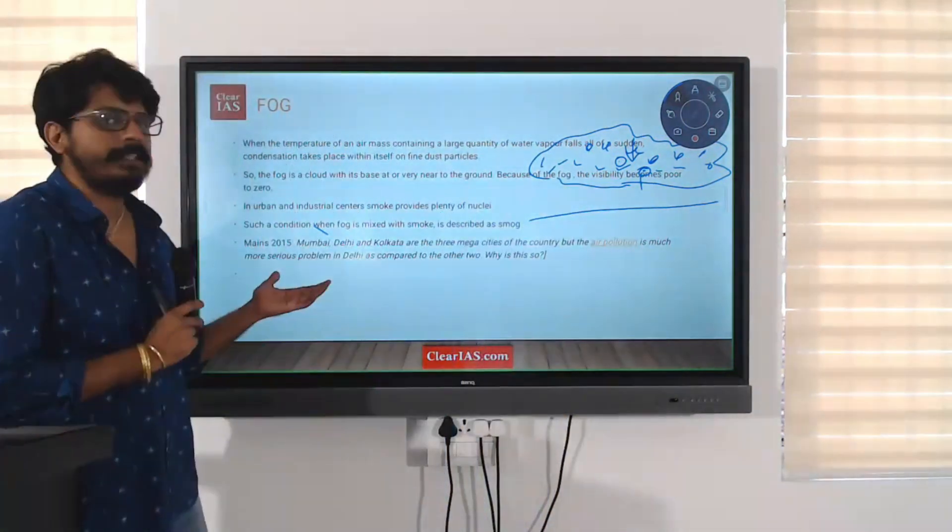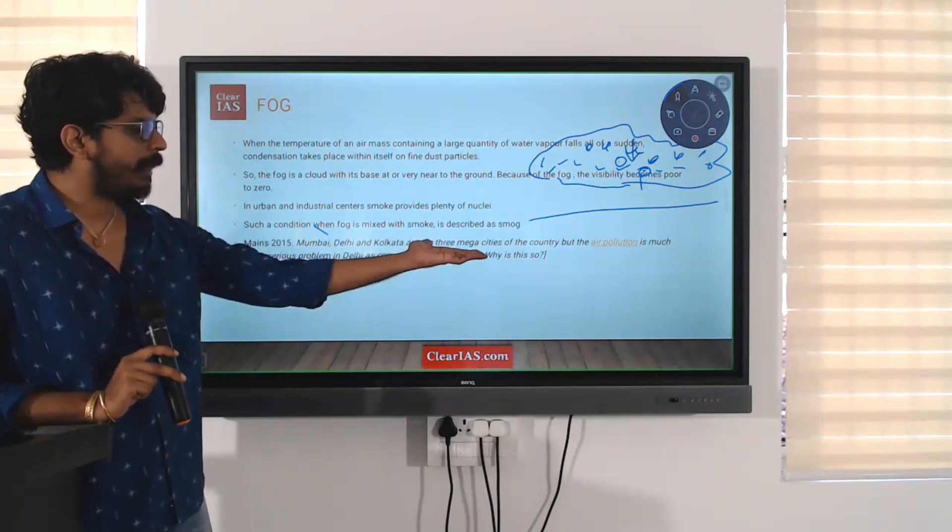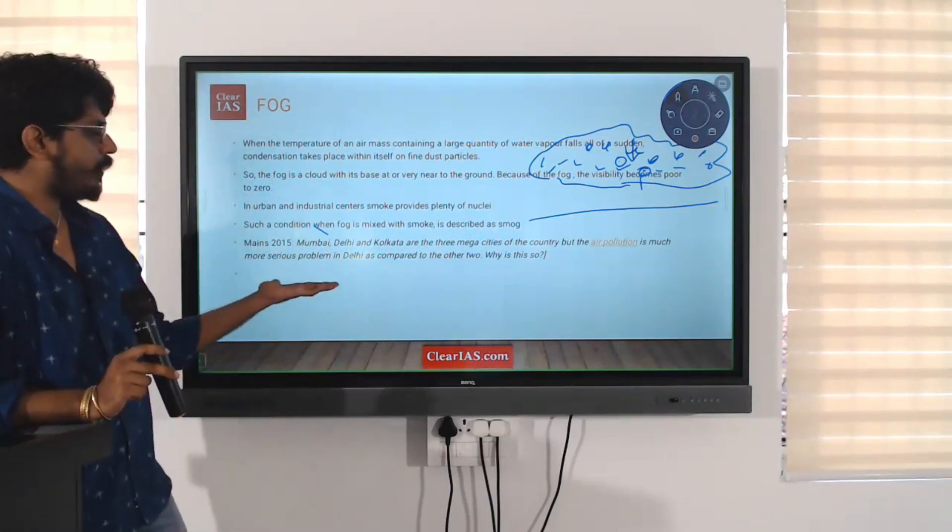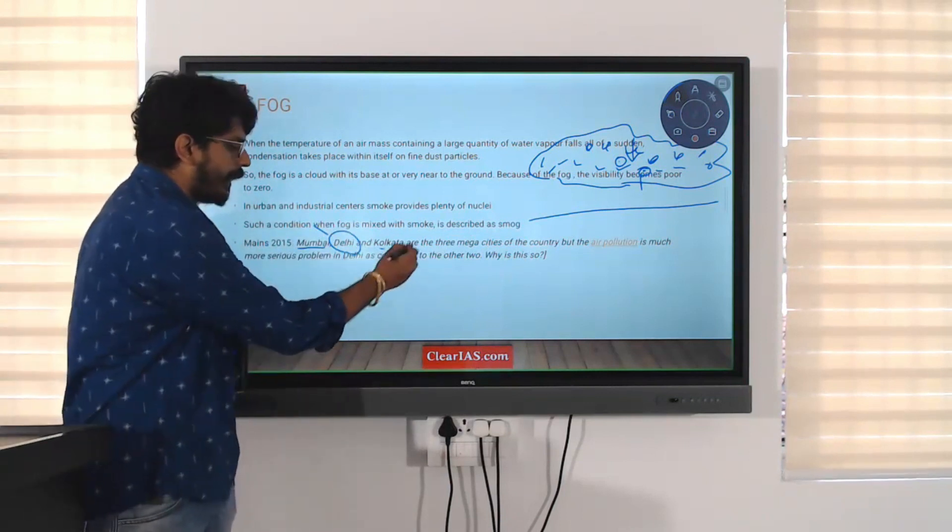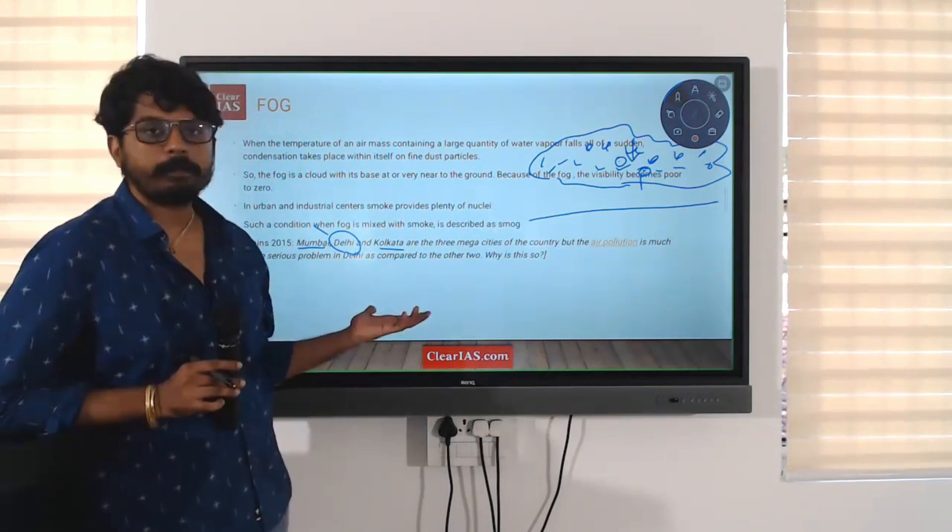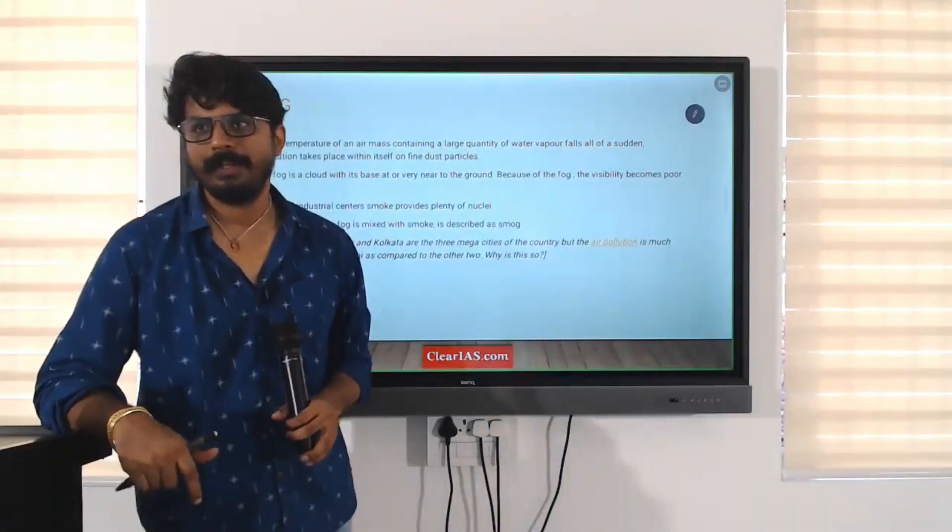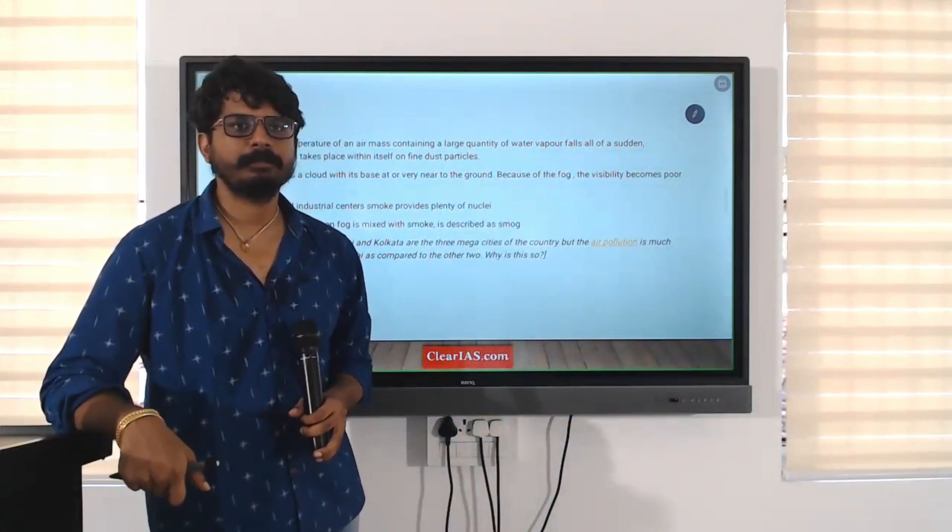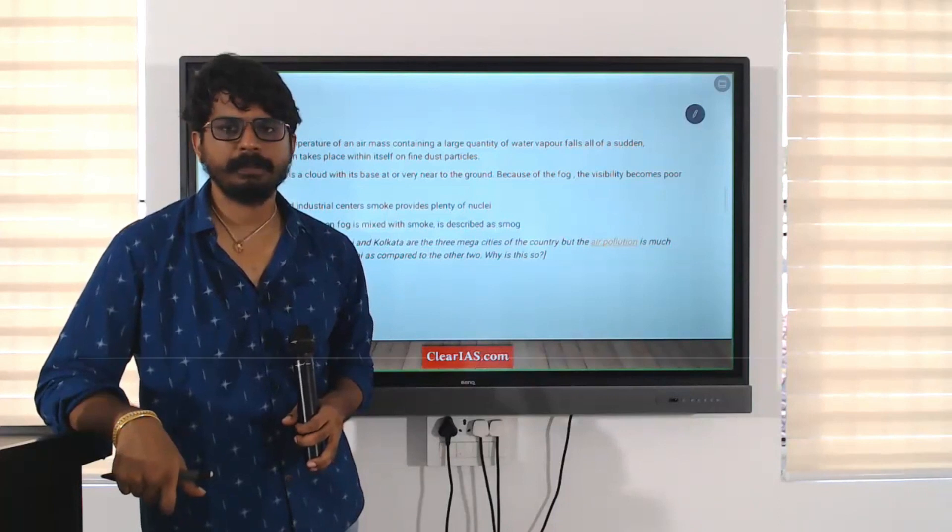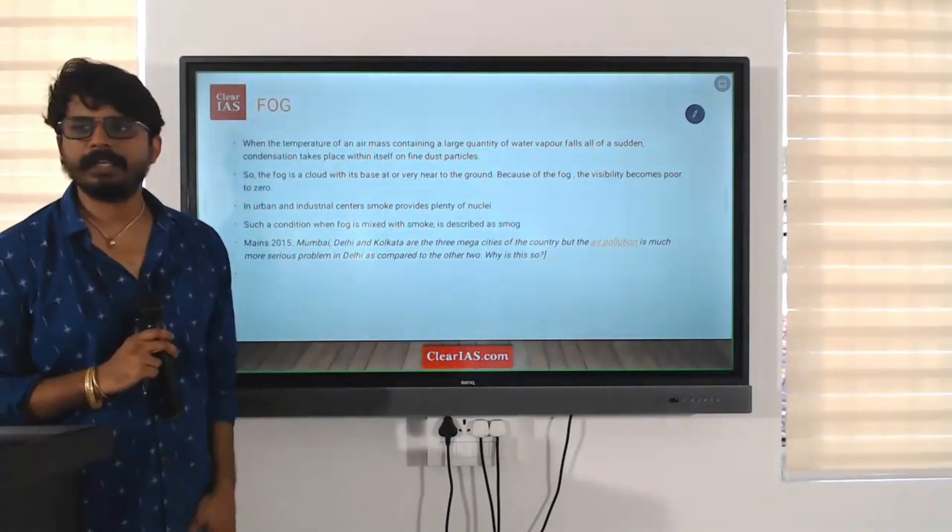Now, this was a very interesting question that was asked in 2015. Mumbai, Delhi and Kolkata are the three mega cities of the country. They left out Chennai here. I don't know why. But the air pollution is much serious problem in Delhi compared to Mumbai and Kolkata. But why air pollution is a bigger problem in Delhi compared to Mumbai or Kolkata? Maybe one good reason then? Oceans play a role in Kolkata and Mumbai. Stabilizing, right? Stubble burning, Haryana, Punjab, all these things. So, you can surely write your answer and submit. If you are interested, you can write this question and give it to me. I will check it out.